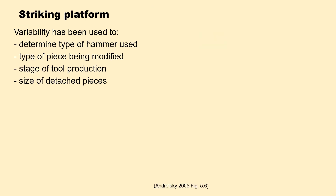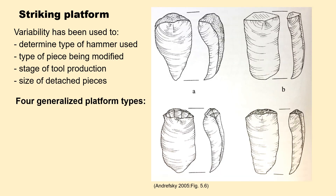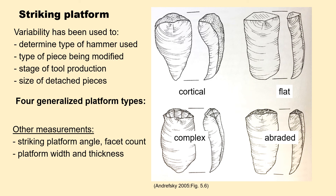Striking platform variability has been used to determine the type of hammer used, the type of piece being modified, the stage of tool production, and the size of detached pieces. Here I'll illustrate just four generalized platform types: Cortical, which has cortex on the striking platform; Flat; Complex, which has many different facets; and Abraded. Of course these may be combined, so you may have an abraded complex platform. Other measurements of platforms might include the platform angle, the facet count, and the platform width and thickness.